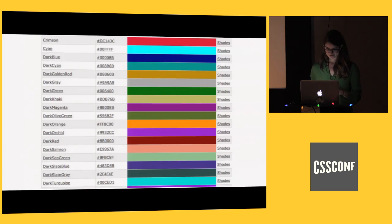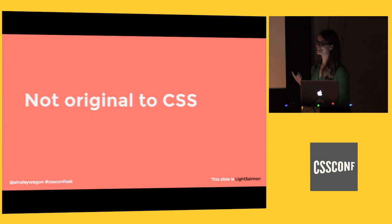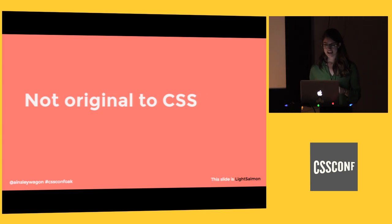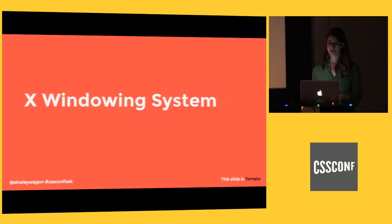I went hunting for more anecdotes — why something was called Papaya Whip or Mint Cream or Gainsborough. The reality is a lot more tedious and black and white, but there's a lot revealed about the history of the web and the possibilities ahead of us. The first thing to clear up is that CSS namespace values are not CSS original. They're web standard colors — as I saw in Brenna's slides, they're used in SVG too — and they were originally descended from the X-windowing system, a windowing system for bitmap displays common on Unix-like operating systems.